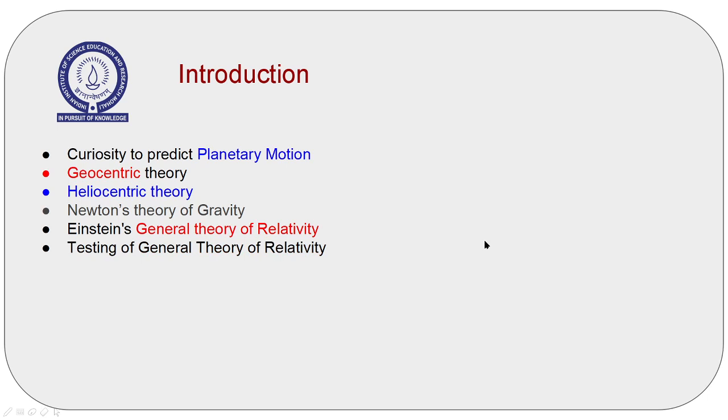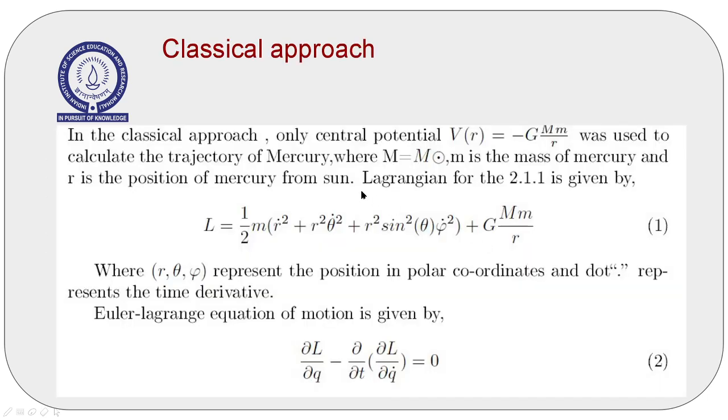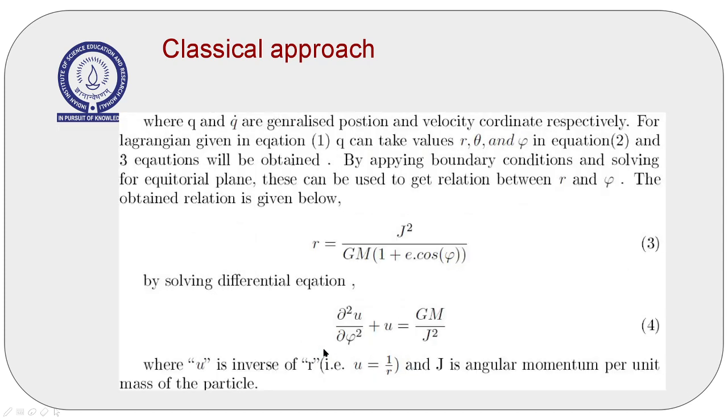Let's review the classical approach. In the classical approach, only central potential of the Sun was used to calculate the trajectory of Mercury. For this potential, the Lagrangian can be written by this. And by solving this Lagrangian, we will get the Euler-Lagrange equation for r, theta, and phi. After simplifying the relation for r, this relation is obtained, which is indeed the elliptic trajectory, which I will show in a few minutes.